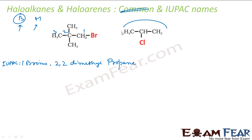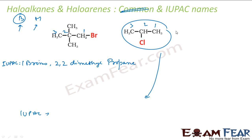Let's check this compound. I'll number it 1, 2, 3 — it doesn't matter because it's symmetrical. So it will be 2-chloro, and the longest chain has 3 carbons — propane. So the IUPAC name is 2-chloropropane.